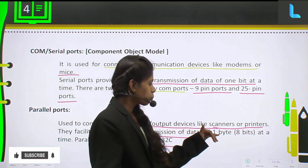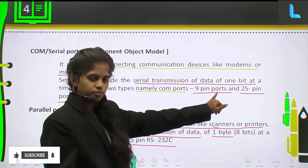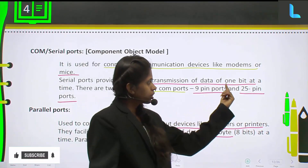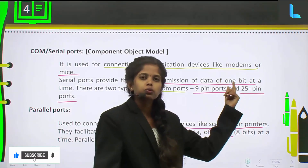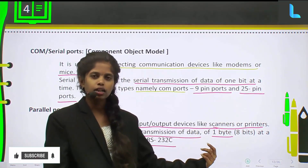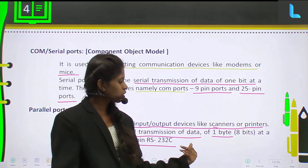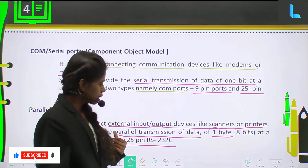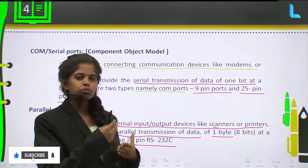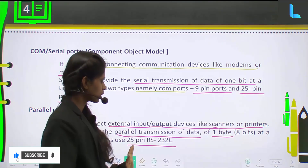Here one byte of data is carried — that means eight bits together make one byte. At a time in the parallel ports, eight bits can be carried, so we call it one byte of data transmitted in parallel. At the same time you can carry more information as well. Parallel transmission happens, and for this they are using the 25-pin RS232C.